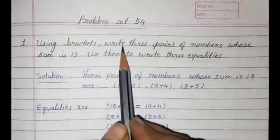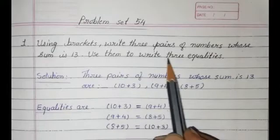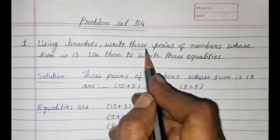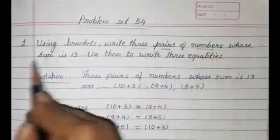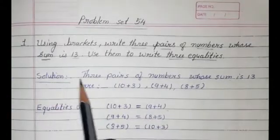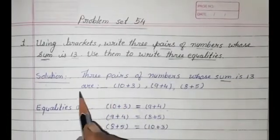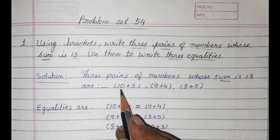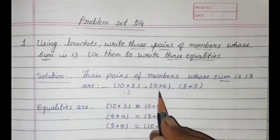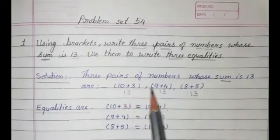Question number 1: Using brackets, write 3 pairs of numbers whose sum is 13. Use them to write 3 equalities. In this question, we write 3 pairs of numbers whose sum — meaning addition — equals 13. So here we write the 3 pairs. First pair: (10 plus 3) — 10 plus 3 is 13. Second: (9 plus 4) — 9 plus 4 is 13. Third: (8 plus 5) — 8 plus 5 is also 13. So these are 3 pairs of numbers.